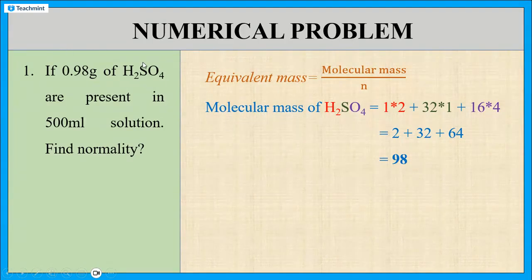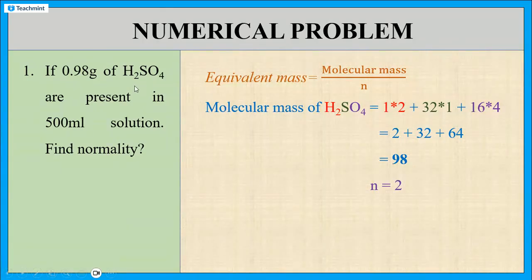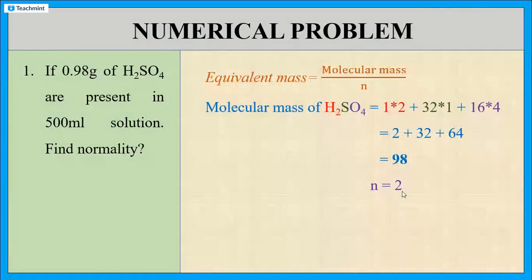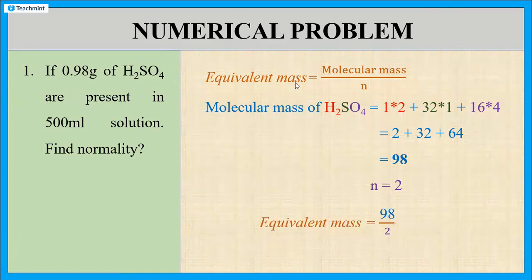Since sulphuric acid can donate 2 H⁺ ions, the valency factor N is equal to 2. For comparison, if it were hydrochloric acid (HCl), which donates only 1 H⁺ ion, then N would be 1. Here it is sulphuric acid, so N equals 2. Substituting into the equivalent mass equation: equivalent mass = 98 / 2 = 49.